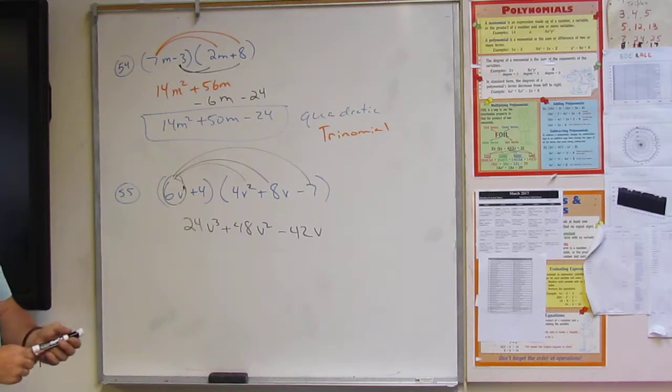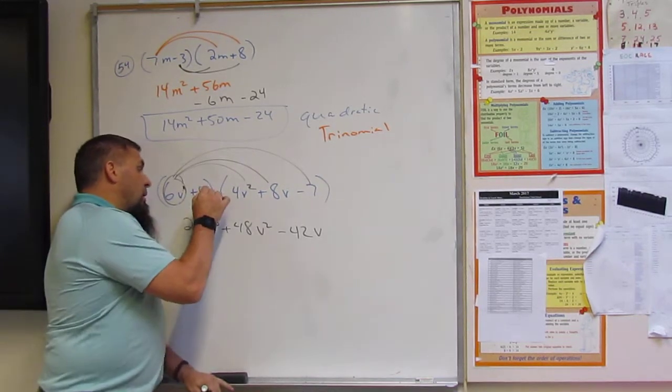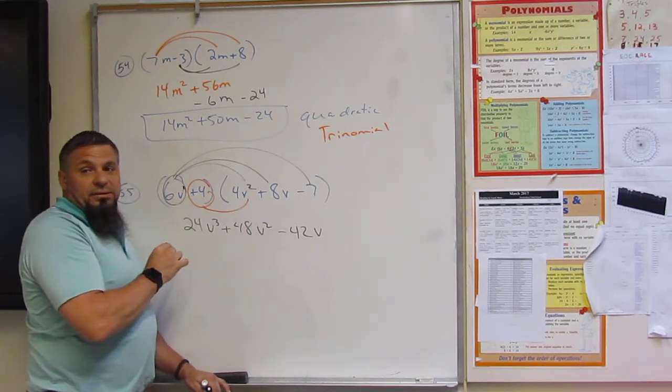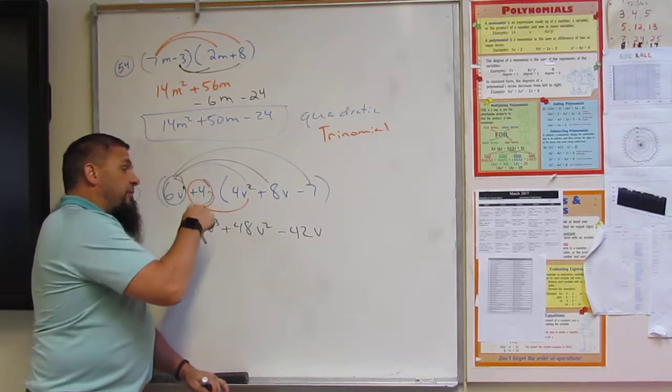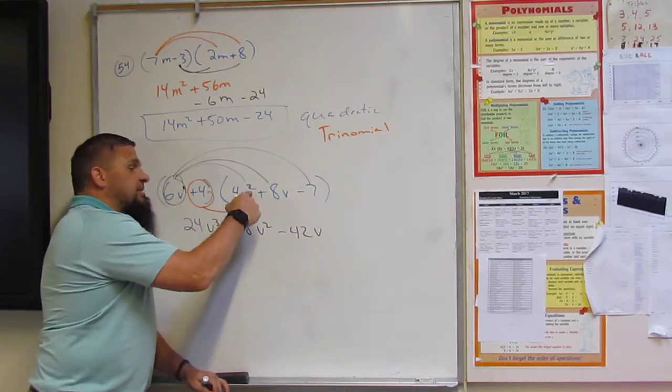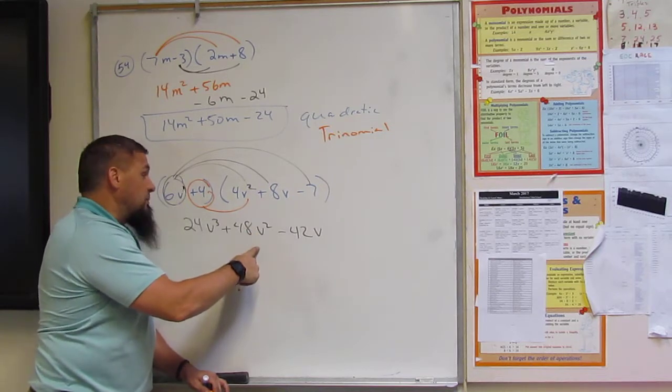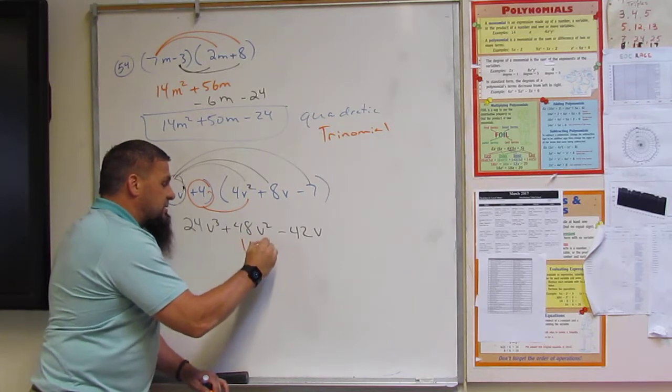And then we do the same thing but under the clamshell, right? So 4 times 4 is 16V squared. So that goes in the V squared column. 16V squared.